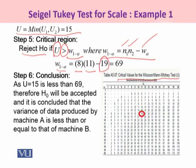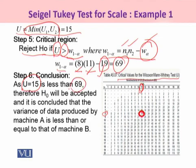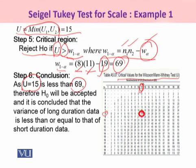Therefore, we would reject H0 if U is greater than w(1 minus alpha), which is 69. As we can see, our U is 15, calculated as the minimum of u1 and u2, and it is very much less than w(1 minus alpha) = 69. Therefore, H0 is accepted, and we may conclude that the variance of the long duration data, which is the x sample, is less than or equal to that of the short duration data, which belongs to the y sample.